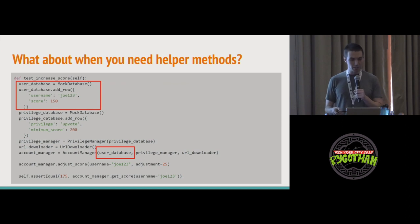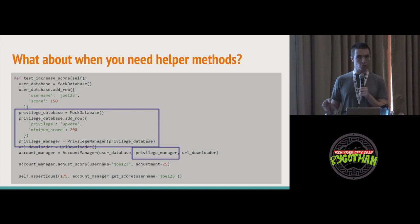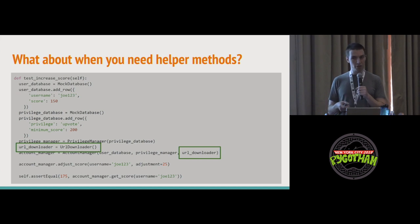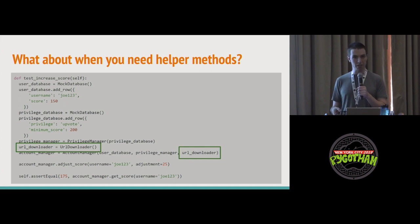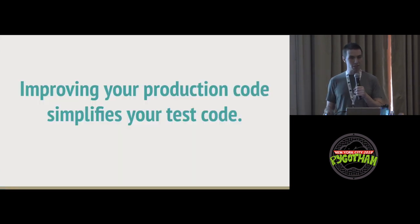If we take a closer look at this Account Manager class, we can see: the first parameter is a user database, which makes sense. Then there's a privilege manager — and that's a code smell, because it's a wrapper around a database and we're operating on two different levels of abstraction. Then the last parameter is a URL downloader instance, which is logically very distant from the other two. It seems the real problem is in the production code. If your production code is hard to instantiate in test code, it's likely hard to work with in production too. Refactoring your production code improves it in both places.